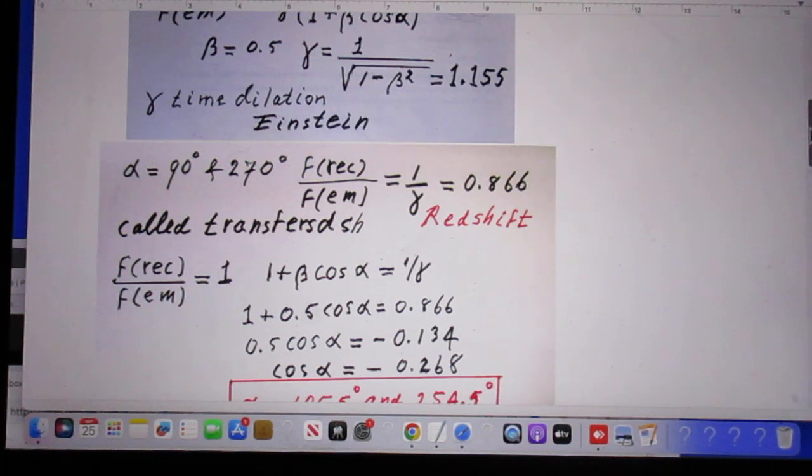Many of you think that the solutions are 90 degrees and 270 degrees, but that is not correct. When the angle is 90 degrees or 270 degrees, there is always redshift, for which we have a name in physics. We call that transverse Doppler shift.